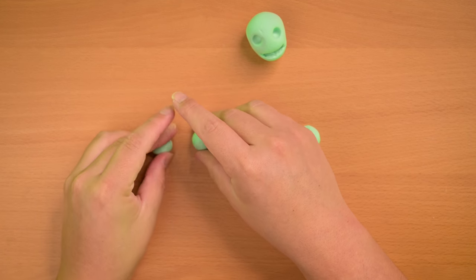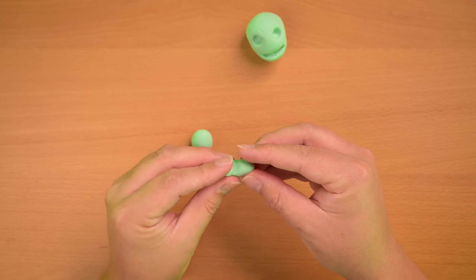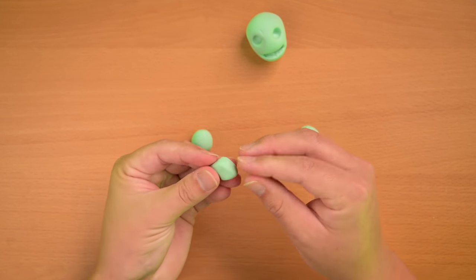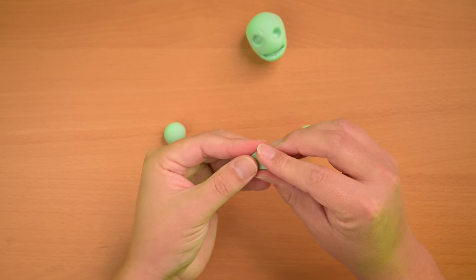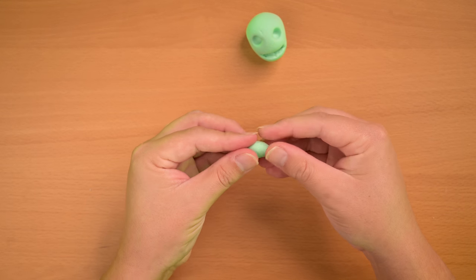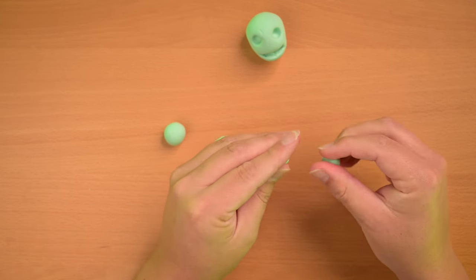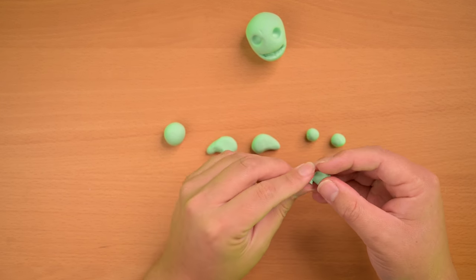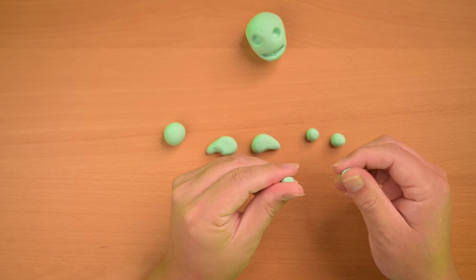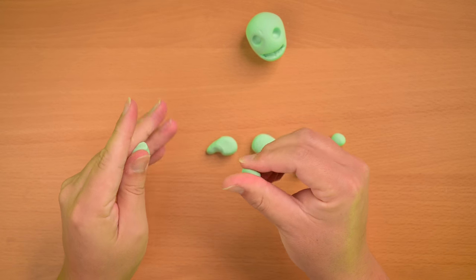Alright, so one of these we're gonna sculpt into like a teardrop shape and that's gonna be his palm and his thumb combined. And do the same thing with the other ball. And then the remaining ones we're gonna divide up again. And we're gonna make the rest of the four fingers for each hand. Don't worry about making them all exactly the same size. It's a zombie anyway, so it's gonna look a little spooky, a little wonky.